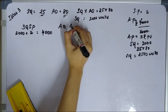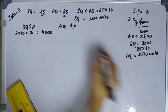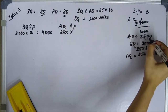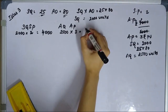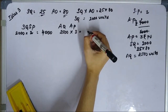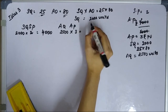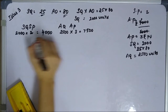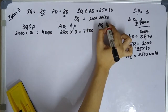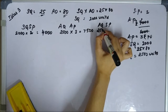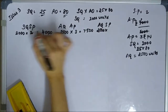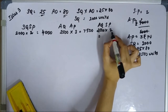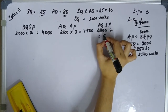AQ into AP: actual quantity 2500 units into actual price 3 rupees equals 7500 rupees. AQ into SP: 2500 into standard price 2 rupees equals 5000 rupees.